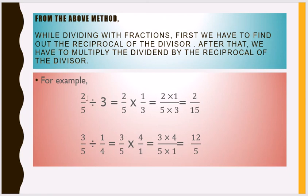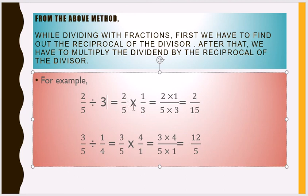For example, 2 by 5 divided by 3. Here 2 by 5 is a fraction and 3 is a whole number, so this is fraction divided by whole number. We multiply 2 by 5 into 1 by 3, where 1 by 3 is the reciprocal of 3. So we multiply the dividend by the reciprocal of the divisor, giving 2 into 1 divided by 5 into 3, which is equal to 2 by 15.